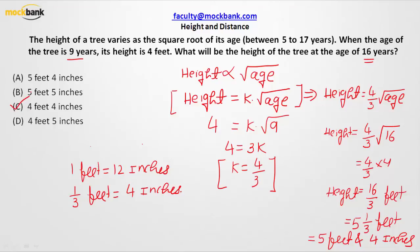Now I know one height and corresponding age, so I will be able to find out what is going to be the proportionality constant value. And hence we will be able to find out and establish the relationship between these two variables, height and age.